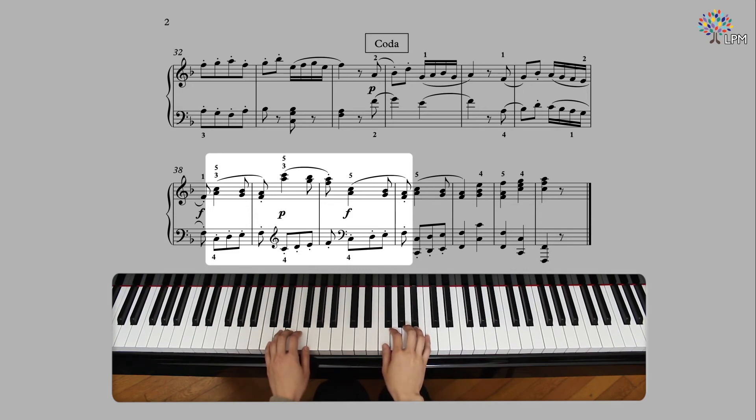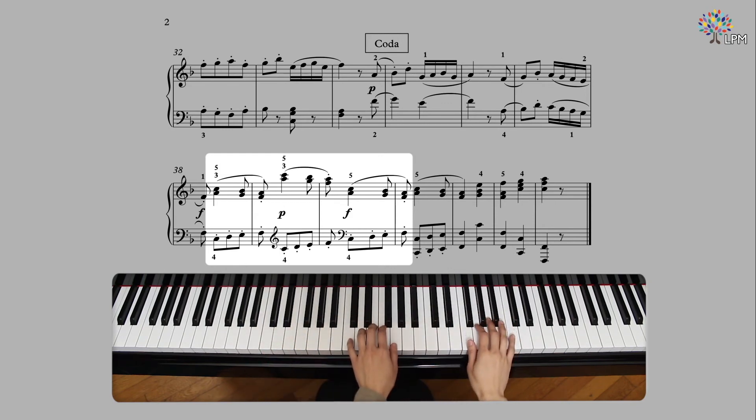Again, you can think of these changes in register as a change in instrument. The lower register can be thought of as a low instrument, such as a bassoon. High register may be the flute.